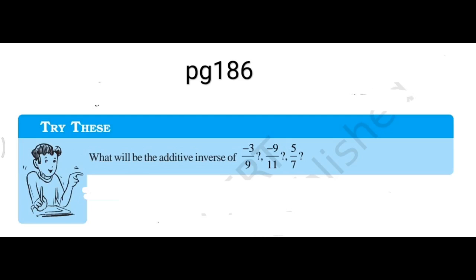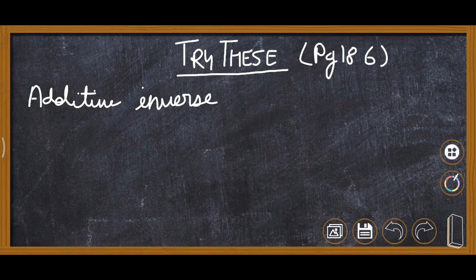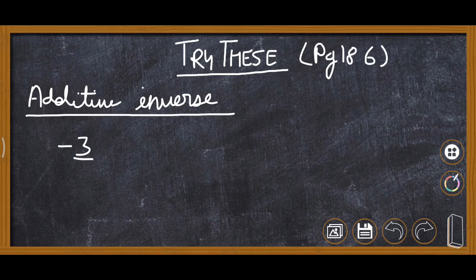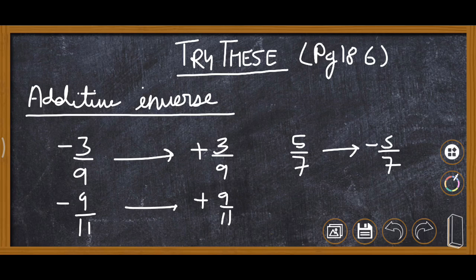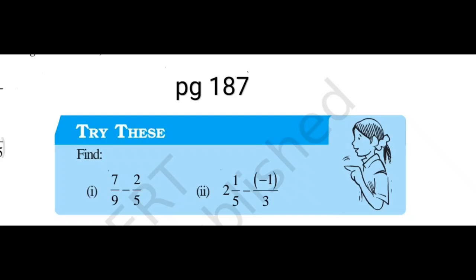This Try These on page 186 asks us to write the additive inverse of the given rational numbers. The additive inverse always changes the sign. So the additive inverse of -3/9 is +3/9, the additive inverse of -9/11 is +9/11, and the additive inverse of 5/7 is -5/7.